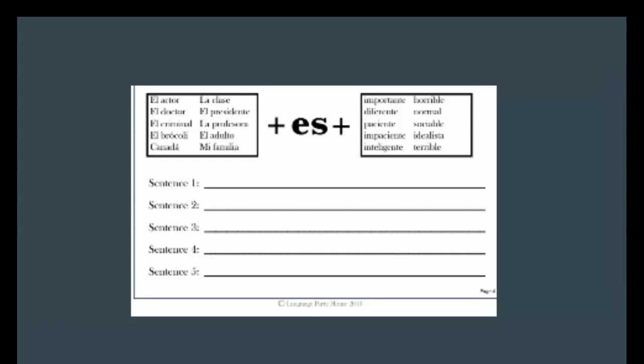Okay, activity five is going to be able to write your own sentence using the words in the boxes. So in the first box on the left you're going to choose one, you're going to add es, and then you're going to choose a word from the box on the second one. So let's say el broccoli es horrible. I really like broccoli so that would be falso for me. But go ahead and choose and write your sentences out.